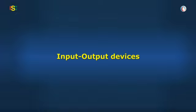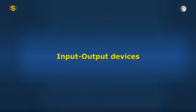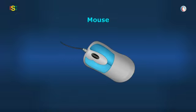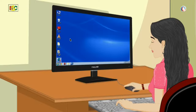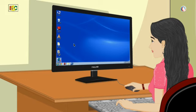Now, let's understand another input device. See this figure, Vidya. This is a mouse, Baba. I know, when I move it over a smooth surface, the pointer on the screen moves in the same direction.